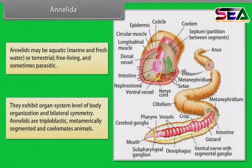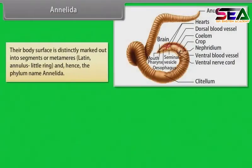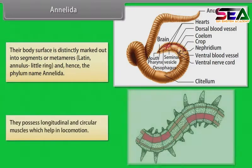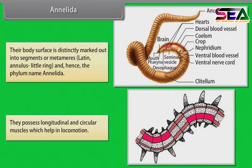Annelids are triploblastic, metamerically segmented and coelomate animals. Their body surface is distinctly marked out into segments or metameres — from the Latin word 'annulus' meaning little ring — and hence the phylum name Annelida. They possess longitudinal and circular muscles which help in locomotion.